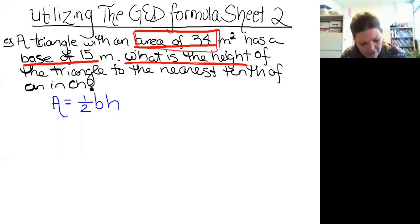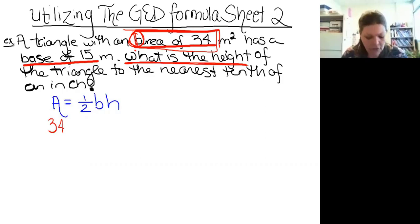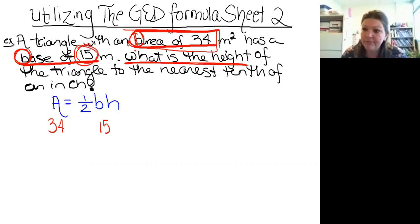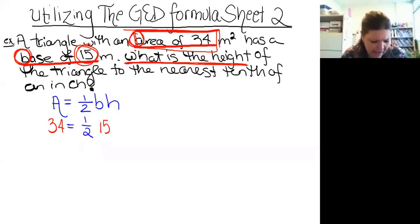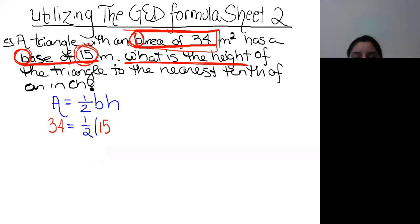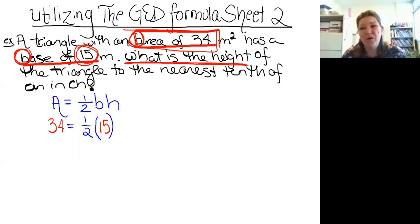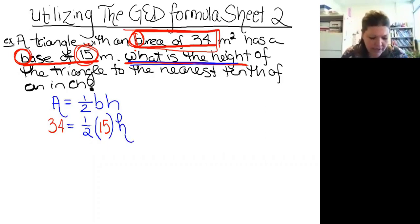We're going to plug in what we know. The area is 34, so I write 34 under A. The base b is 15, so I write 15 under b. The formula becomes 34 equals one-half times 15 times h. The half and the 15 shoved together means multiplication, and I'll use parentheses to avoid confusion with the letter x. H is the unknown — the height — so it stays as a letter.